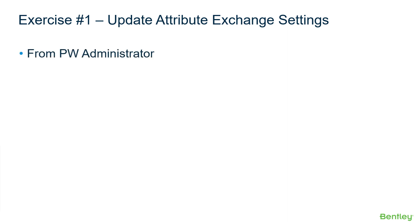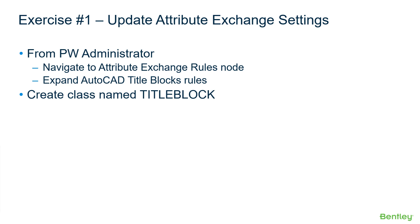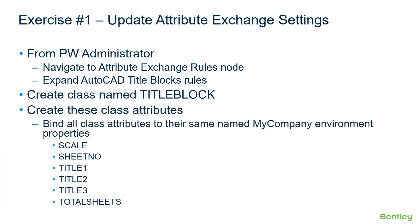For exercise one, we're going to update the attribute exchange settings. From ProjectWise Administrator, we're going to navigate to the attribute exchange rules node, expand the AutoCAD title blocks rules, create a class named title block, create the class attributes, and bind them to the MyCompany environment property with the same name. Now let's go into ProjectWise Administrator and adjust the AutoCAD title block exchange rules.